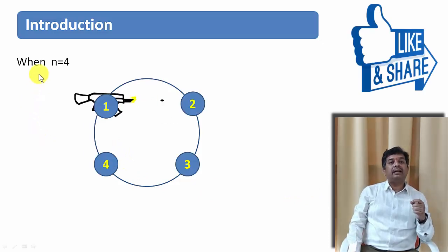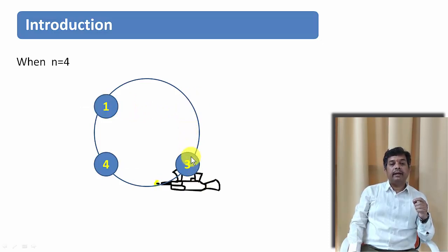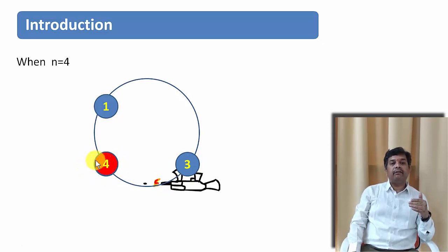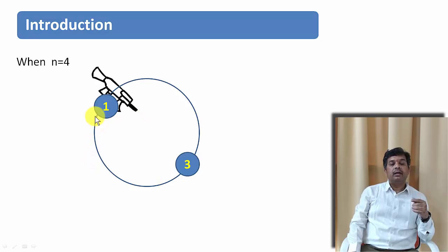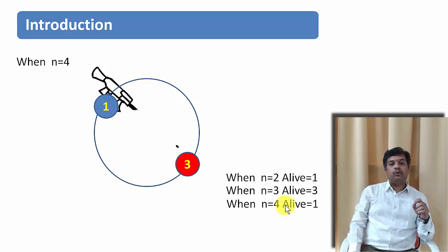Let us check what happens when N equals 4. The first person has the gun, kills person 2 immediately to his right, and passes the gun to person 3. Person 3 kills person 4, then passes the gun back to person 1. Person 1 kills person 3, and after that person 1 gets freedom. So when N equals 4, person 1 is again alive.